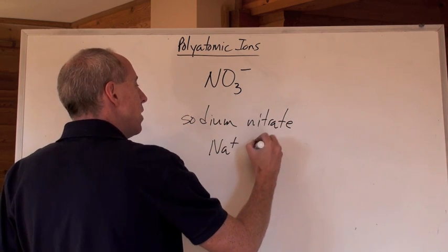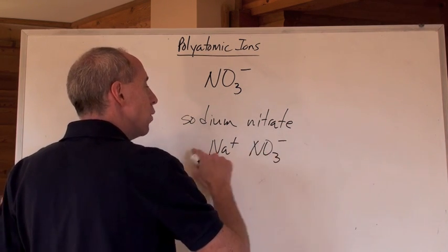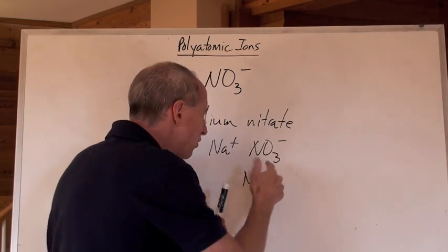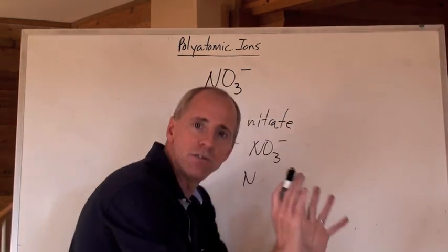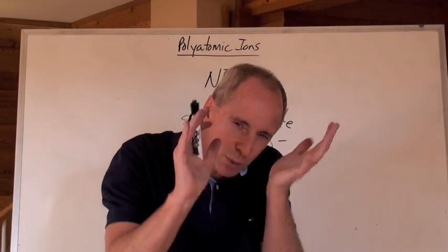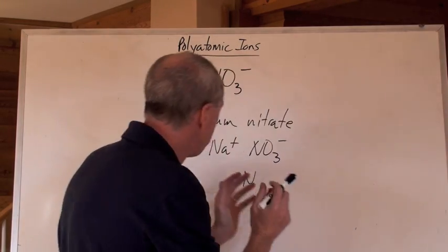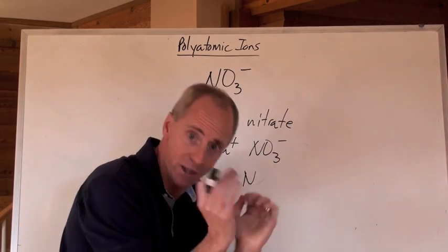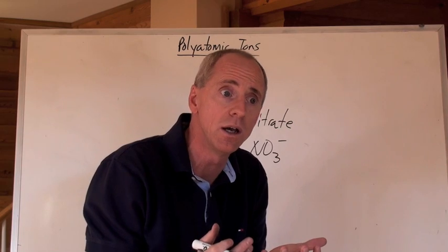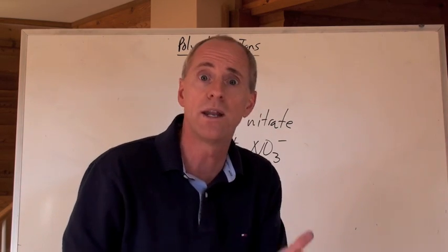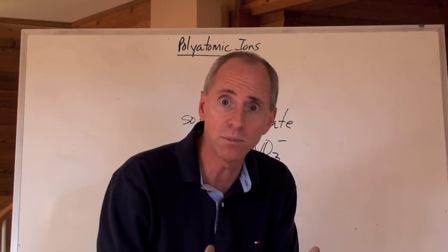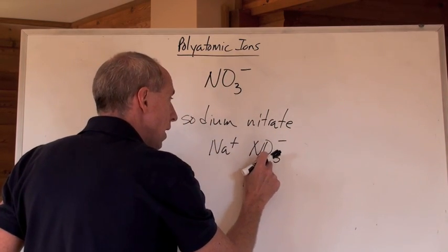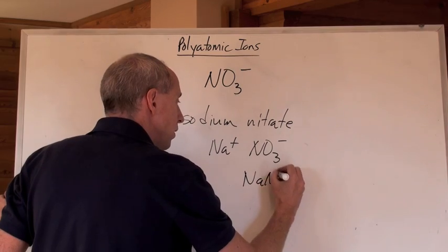Na is a positive. Nitrate is NO3 negative. When you make a compound, positive 1, negative 1. Now, you're going to say, well, there's three of these. No, look, that's not a three negative or anything like that. This whole thing, this nitrate is a one negative charge. Just treat it like it was a Cl with a one negative charge. Just treat it as one unit. This is Na with a positive 1, NO3 with a negative 1, NaNO3.